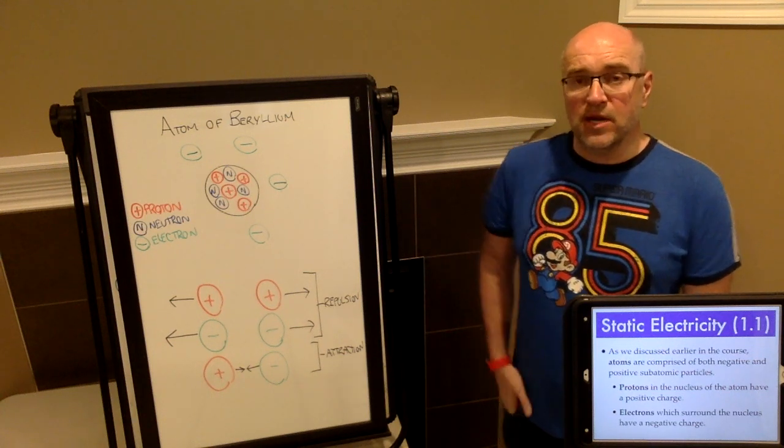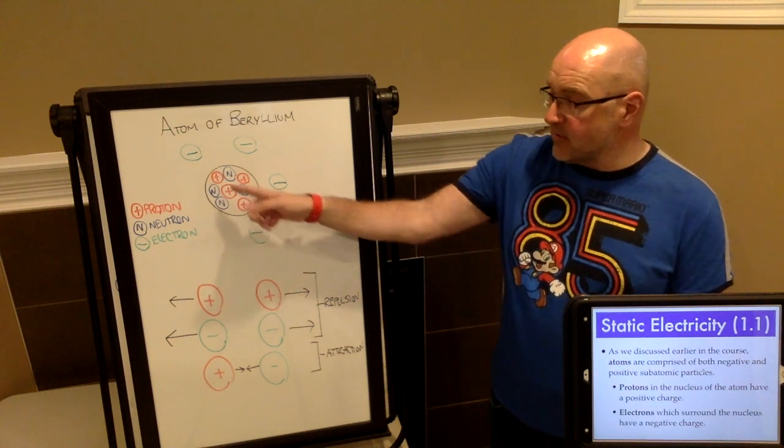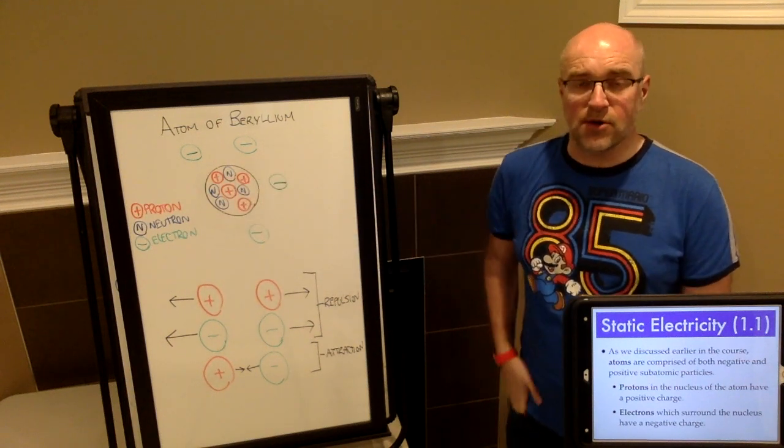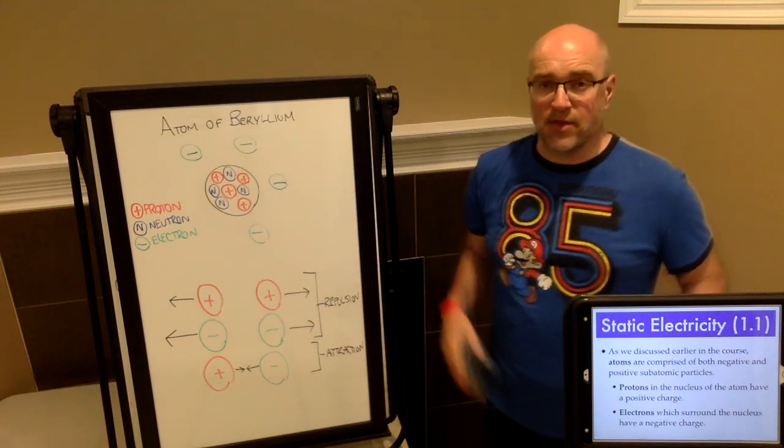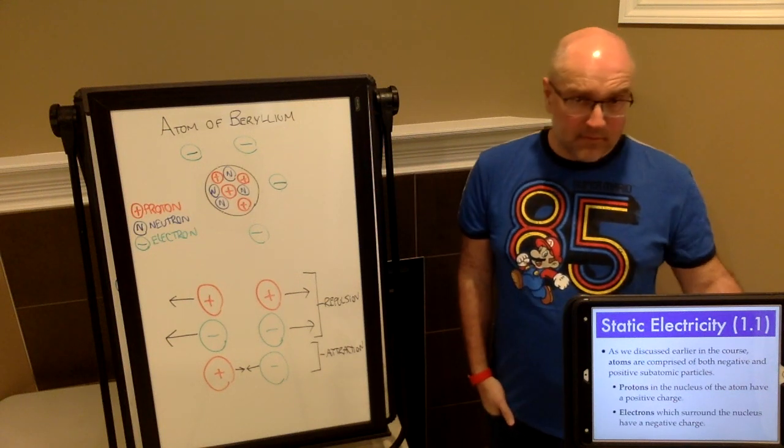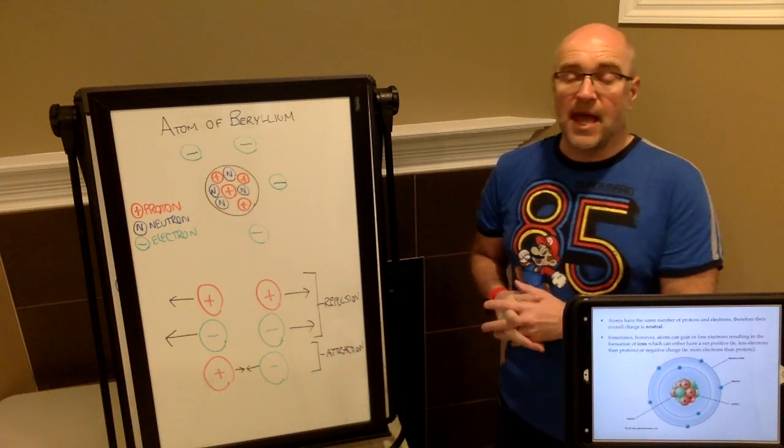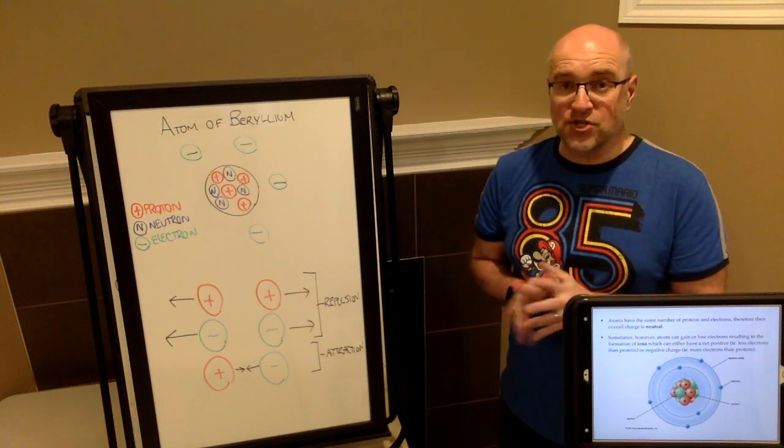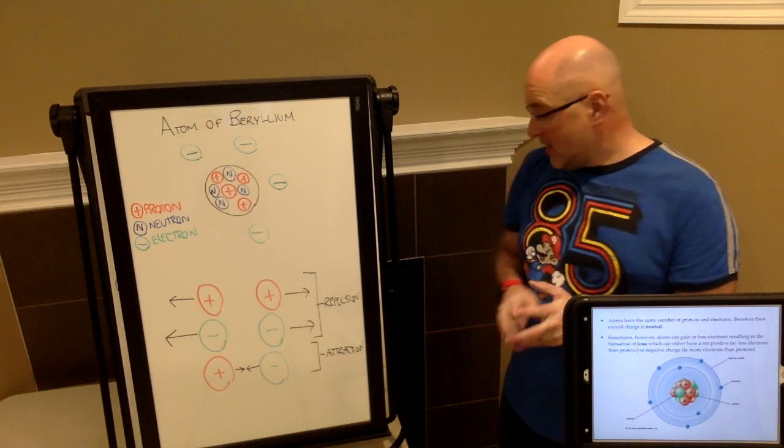If you remember from Unit B, we discussed that the atom is made up of several subatomic particles. There are positively charged protons found in the nucleus, neutrally charged neutrons also found in the nucleus, and negatively charged electrons which surround the nucleus in a large open space. An atom has equal amounts of positively charged protons and negatively charged electrons, so atoms do not have a charge. They are neutral.